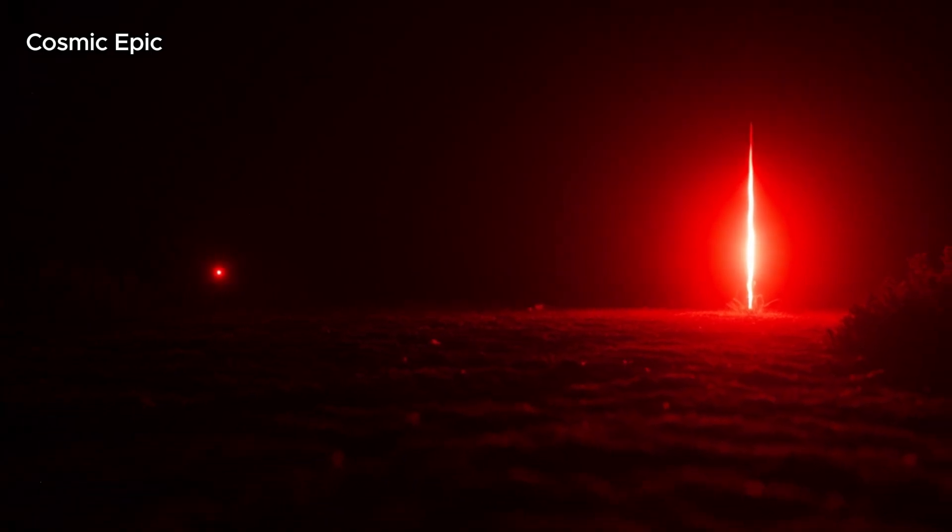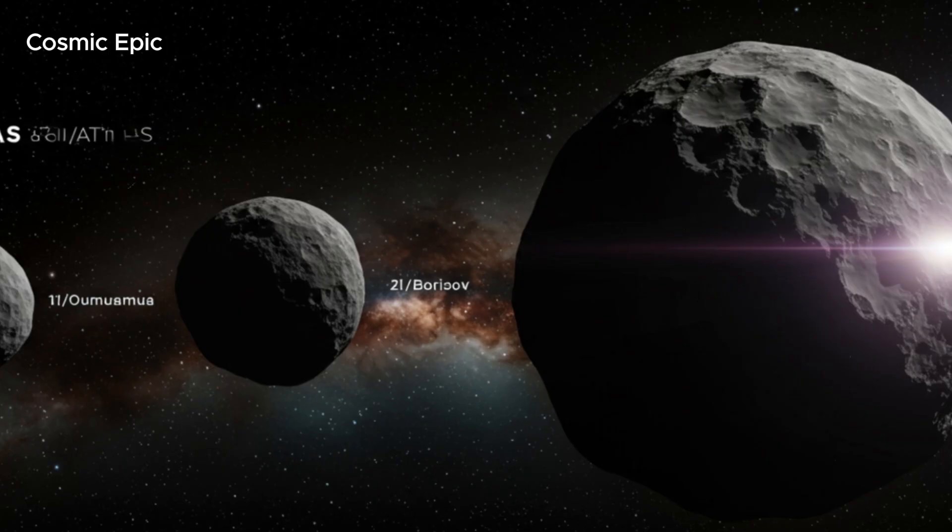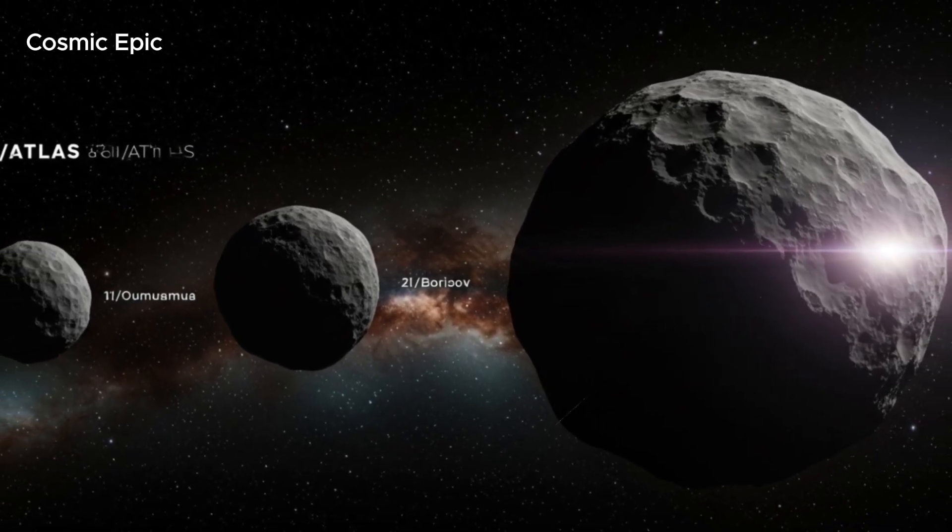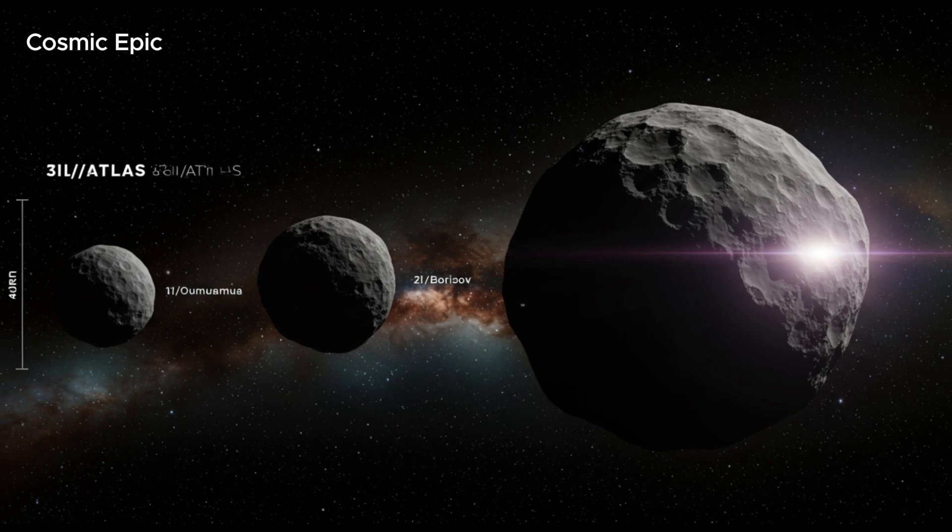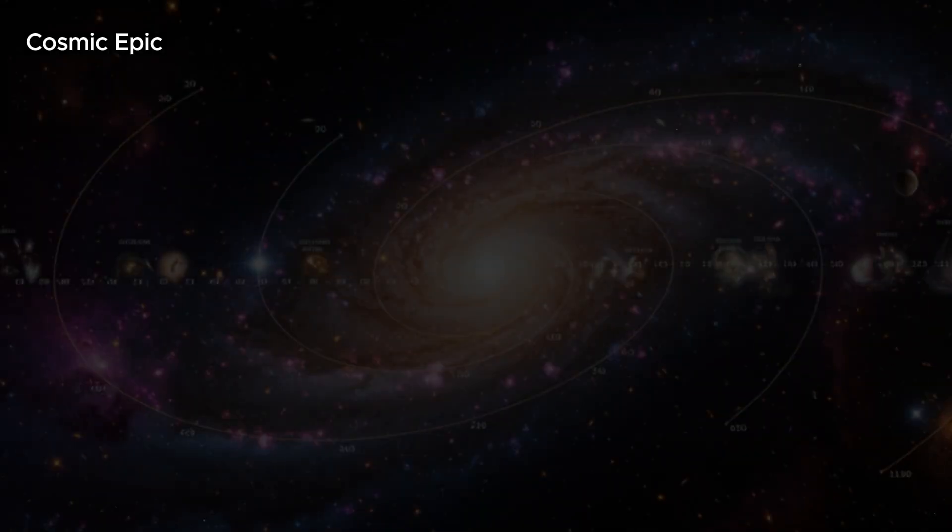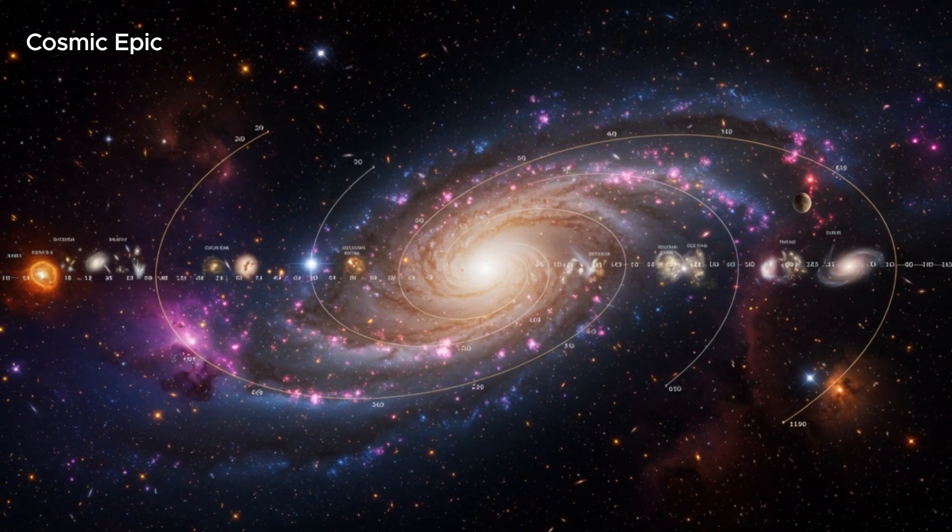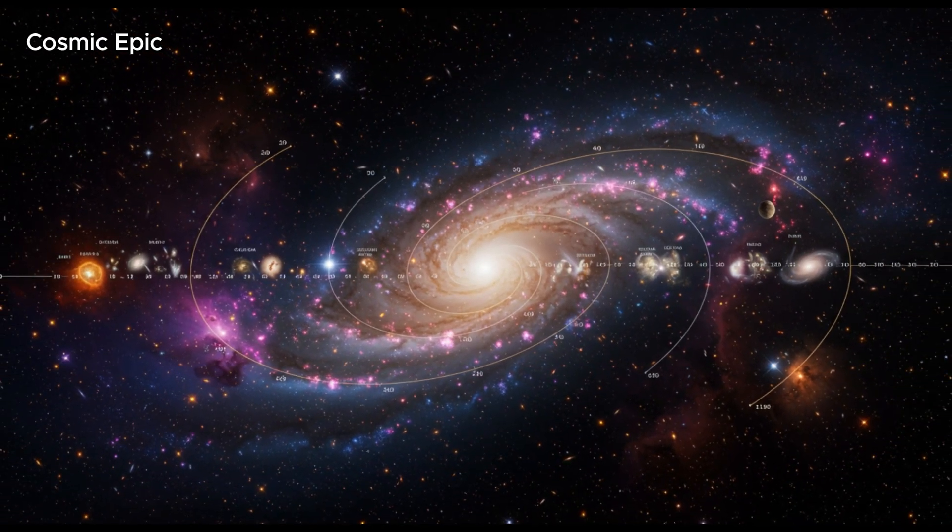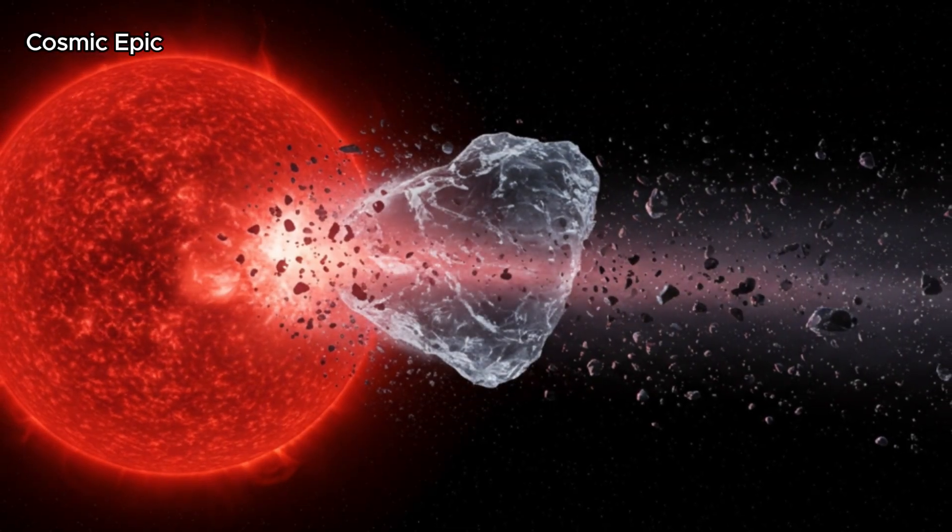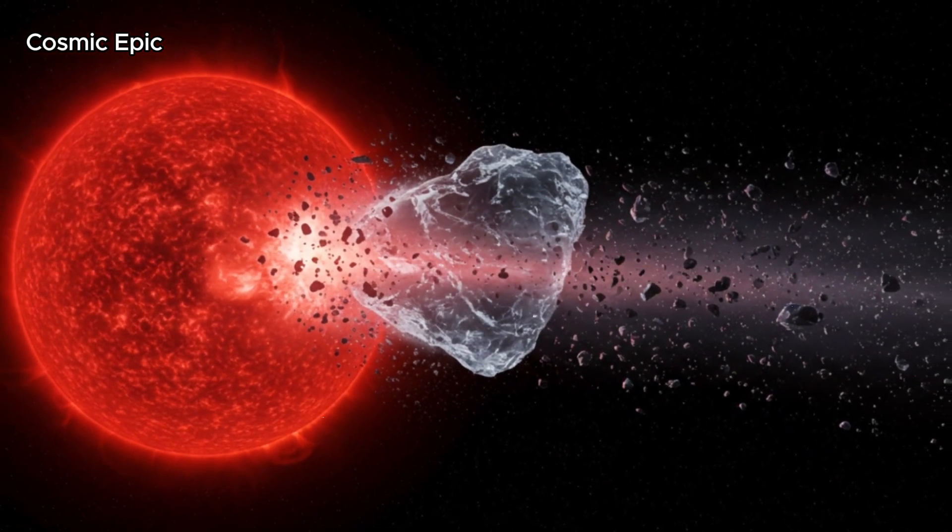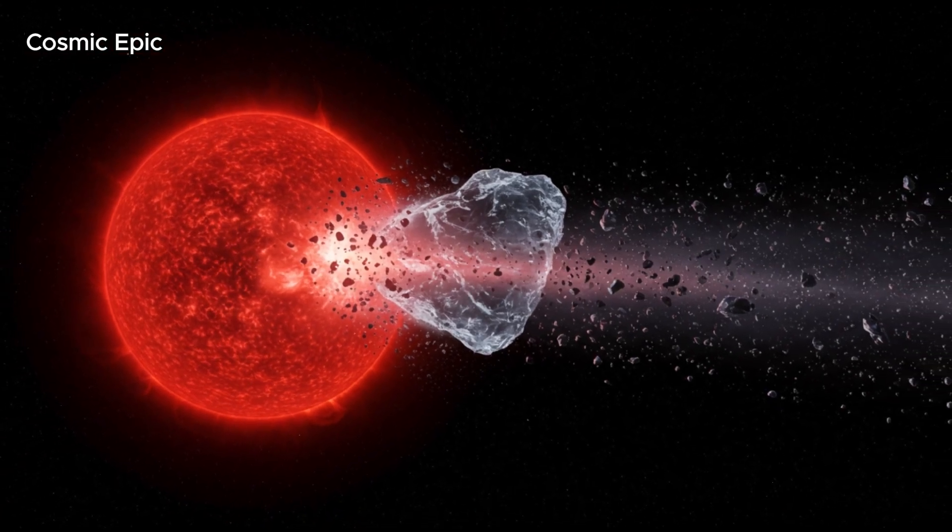This object is unlike anything we've seen before. It's not just passing through. It's slicing through our solar system like a blade, with a speed of 58 kilometers per second and a sharp curved path. It's moving faster than both Oumuamua and Borisov. And yet, we know very little about why it's here or what it's made of.